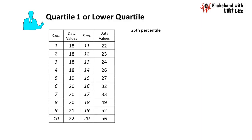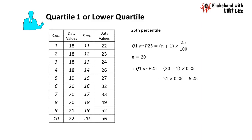The first quartile is the 25th percentile, and the formula for the 25th percentile is given as (n + 1) × 25 / 100. The number of data values is 20, so n = 20. Substituting: 21 × 0.25 = 5.25. Hence the lower quartile is the value at position 5.25, which is 19 at the 5th position plus 0.25 of the way from 19 to 20 — that is, 19.25.